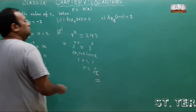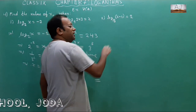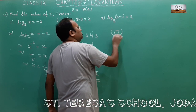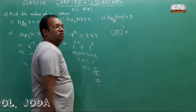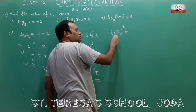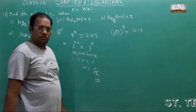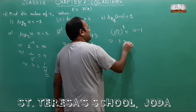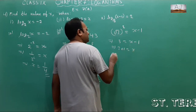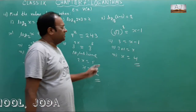Third bit: log of (x minus 1) with base square root of 3 is equal to 2. Convert to exponential form: square root of 3 to the power 2 equals x minus 1. Square root of 3 squared is 3. So 3 equals x minus 1, which gives x equals 4. Now try the next question.